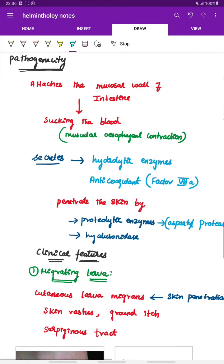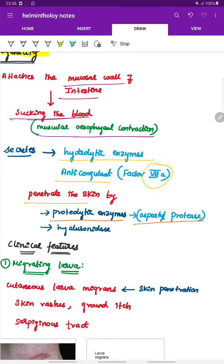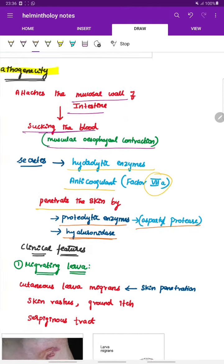Next is the pathogenicity. The hookworm attaches to the mucosal wall of the intestine and sucks the blood, causing muscular esophageal contraction. It secretes hydrolytic enzymes and anticoagulant like factor 7a. By these enzymes and anticoagulant it penetrates the skin, with the help of mainly the proteolytic enzyme aspartyl protease and hyaluronidase.